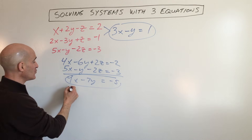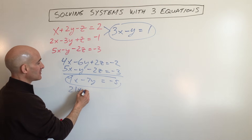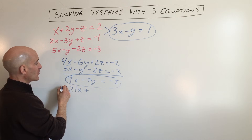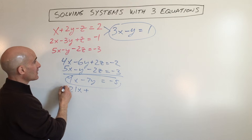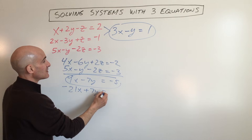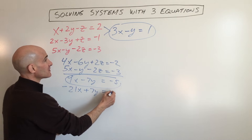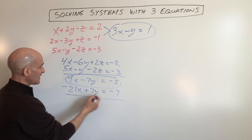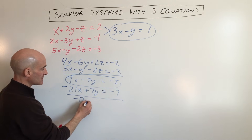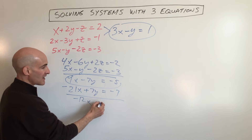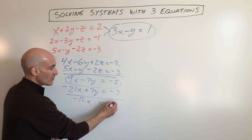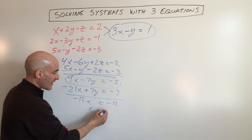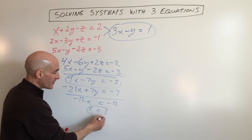So if we do that, we get negative 21x plus 7y equals negative 7. And we're going to add those together. We get negative 12x — the y's cancel — equals negative 12. Divide by negative 12: x equals 1.